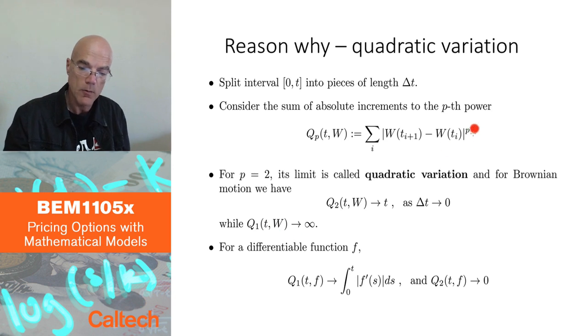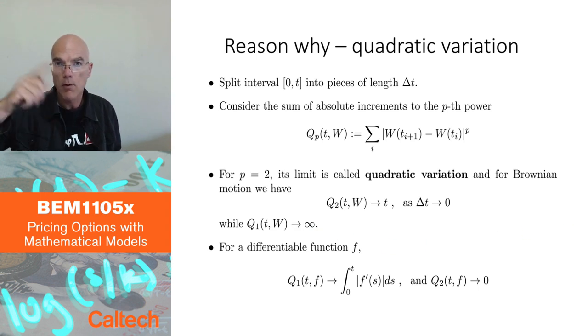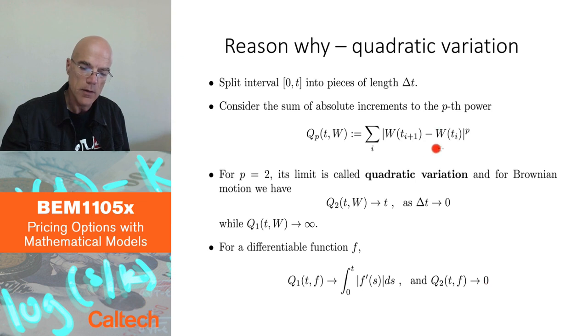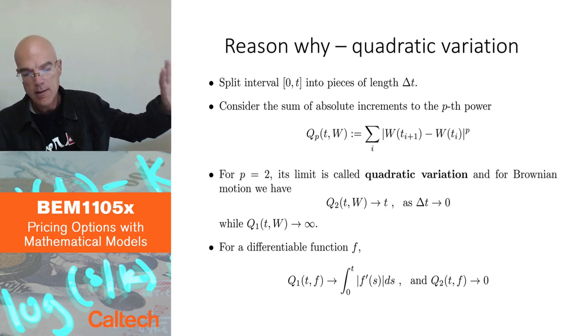For Brownian motion, these quadratic increments, quadratic changes in the value across small intervals, they converge to t. If I put t equal to 1 here, the first variation converges to infinity. Brownian motion is so volatile, varies so much, that its first variation explodes and goes to infinity. For smooth functions that have derivative, it converges to the integral of the derivative of the function. But since Brownian motion doesn't have a derivative, it converges to infinity. But for smooth functions, the second variation converges to 0. But for Brownian motion, the second variation is finite but not 0, it converges to t.